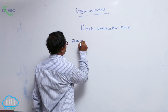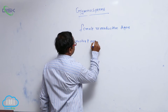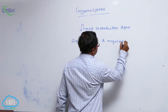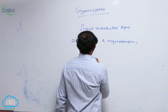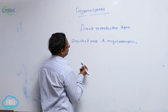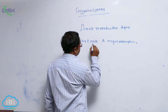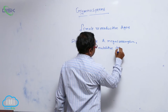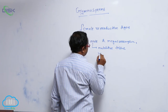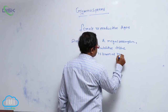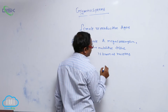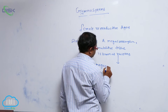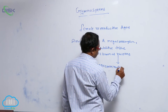Structure of ovule or megasporangium. Generally in gymnosperms, the ovule or megasporangium has nutritive tissue known as nucellus. Inside the nucellus, one cell is developed into the megaspore mother cell.